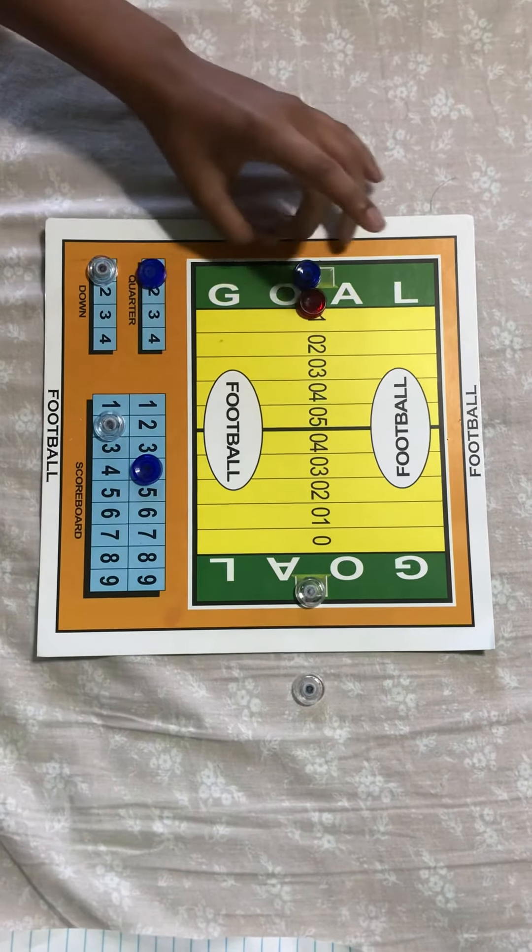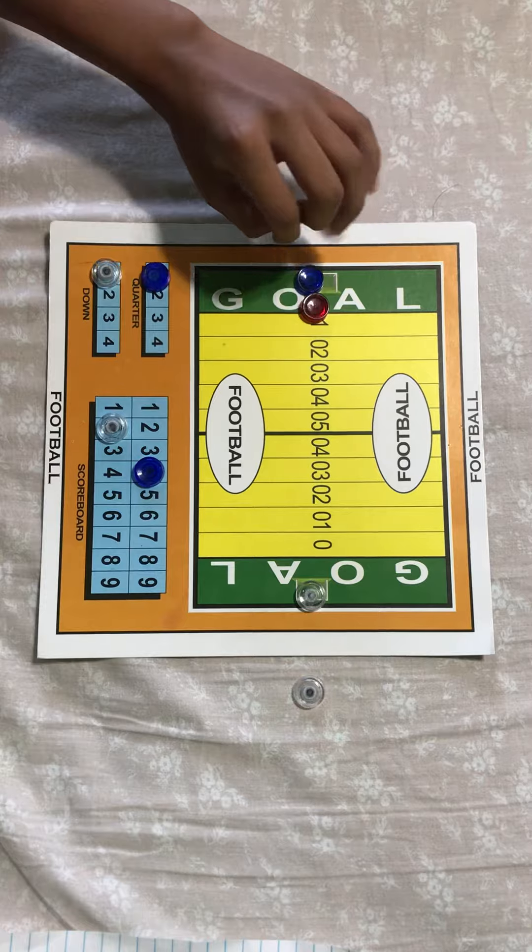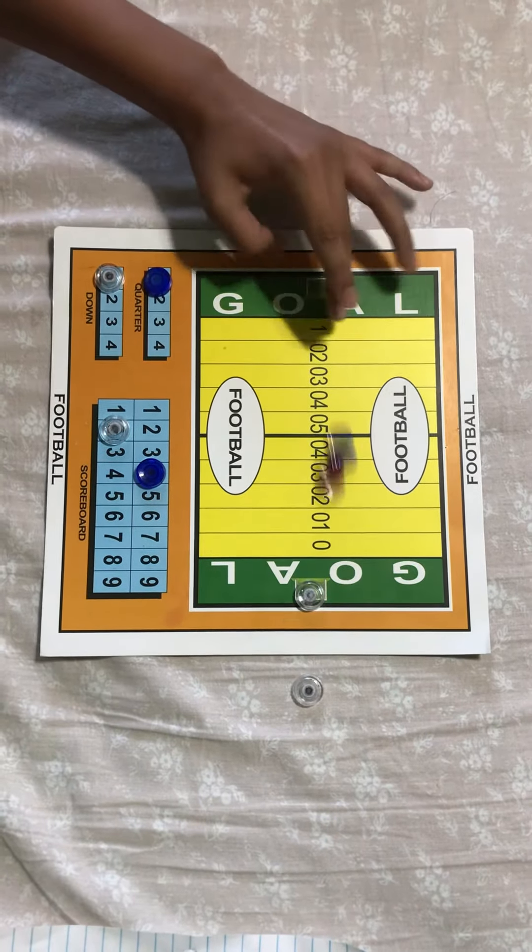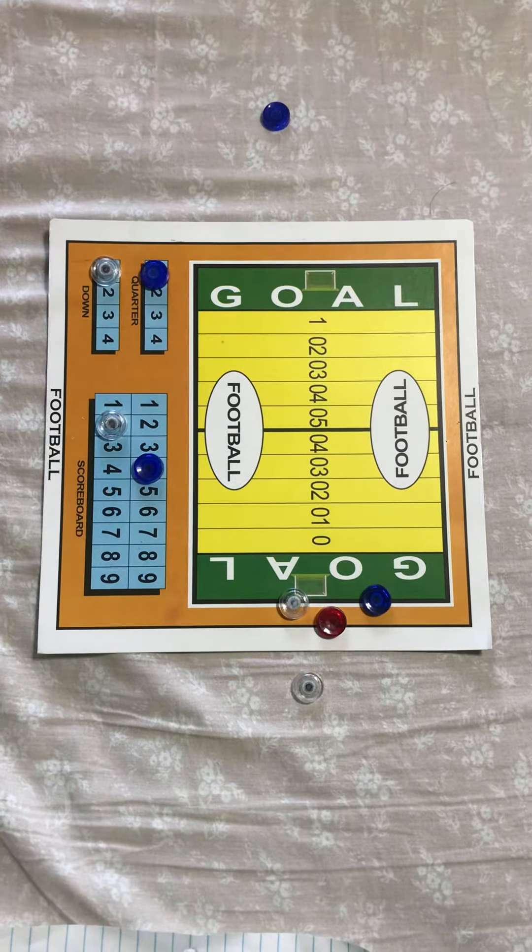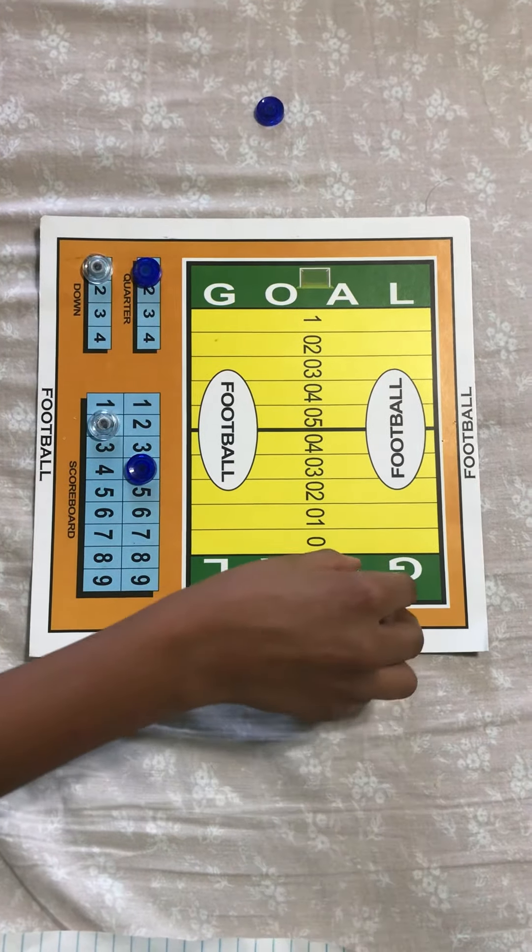Now for example, if player one hits the ball past the line, player one is out and there will be a new player.